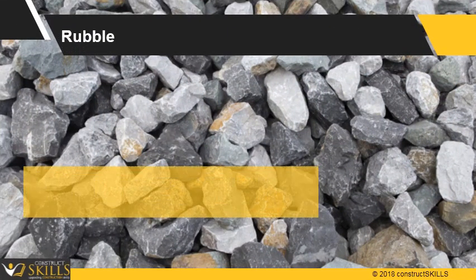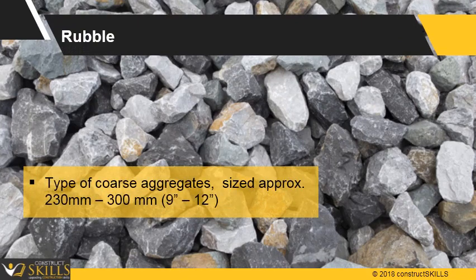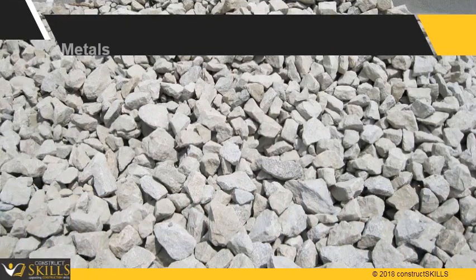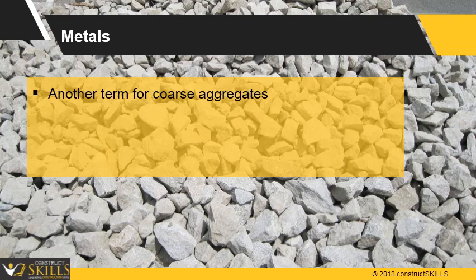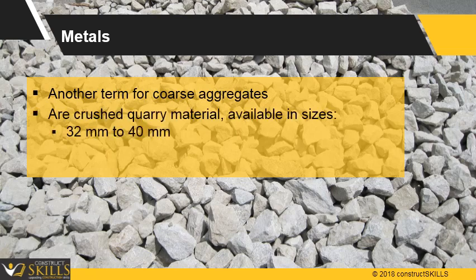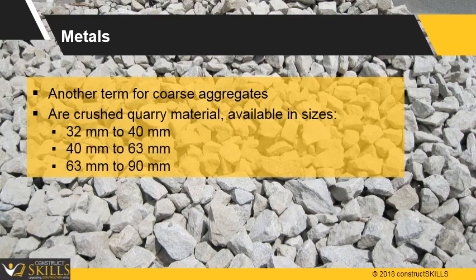Rubble: a type of coarse aggregate with size 230 mm to 300 mm, or 9 inches to 12 inches. Metals: the term is used for quarry material coarse aggregates. Aggregates are available in common sizes of 32 to 40 mm, 40 to 63 mm, and 63 to 90 mm.